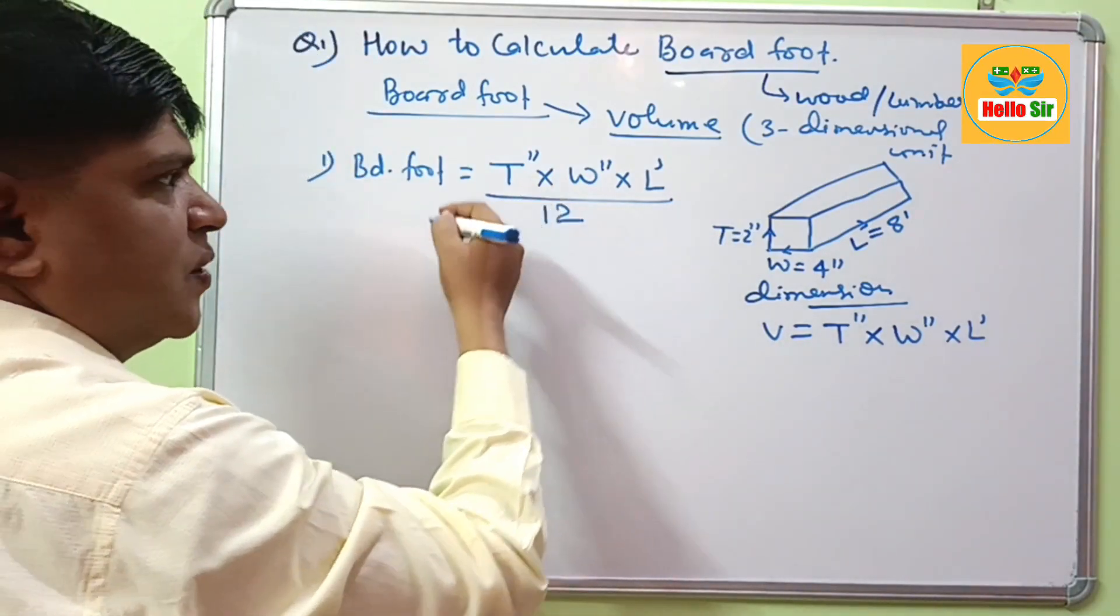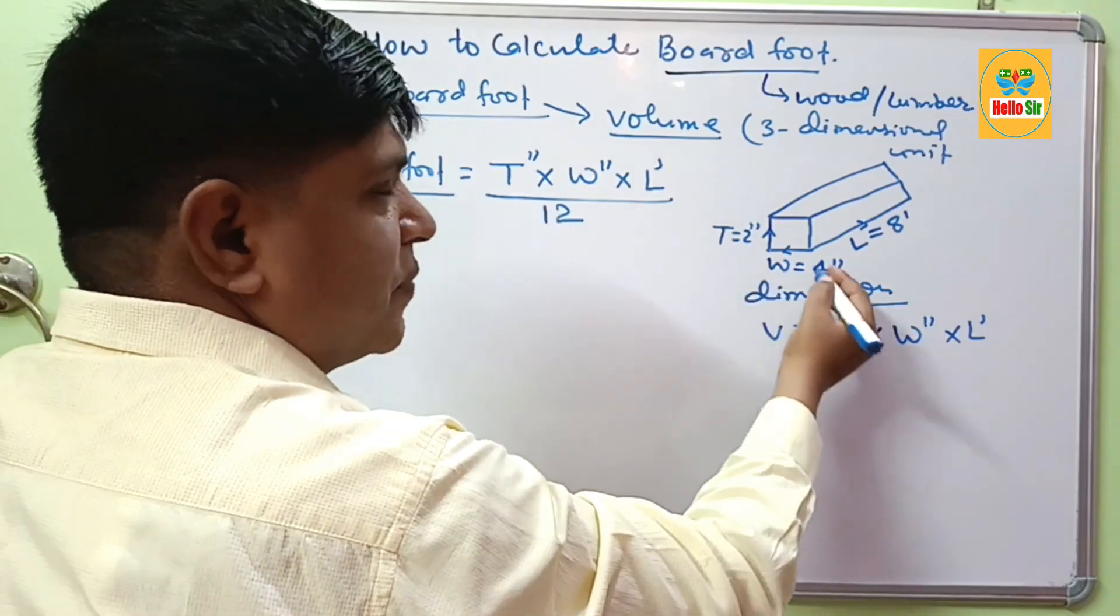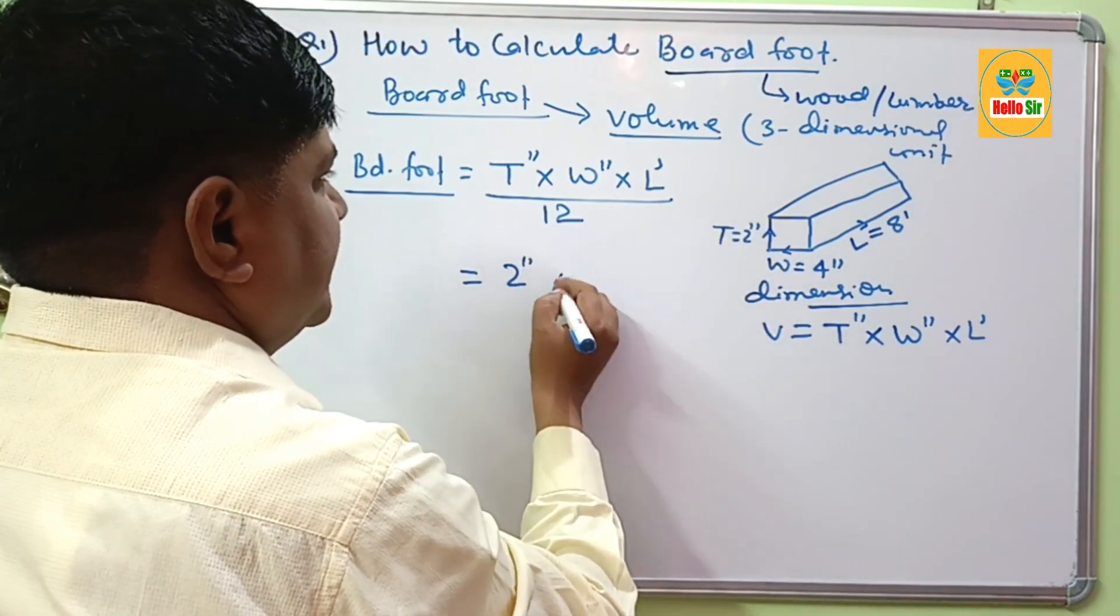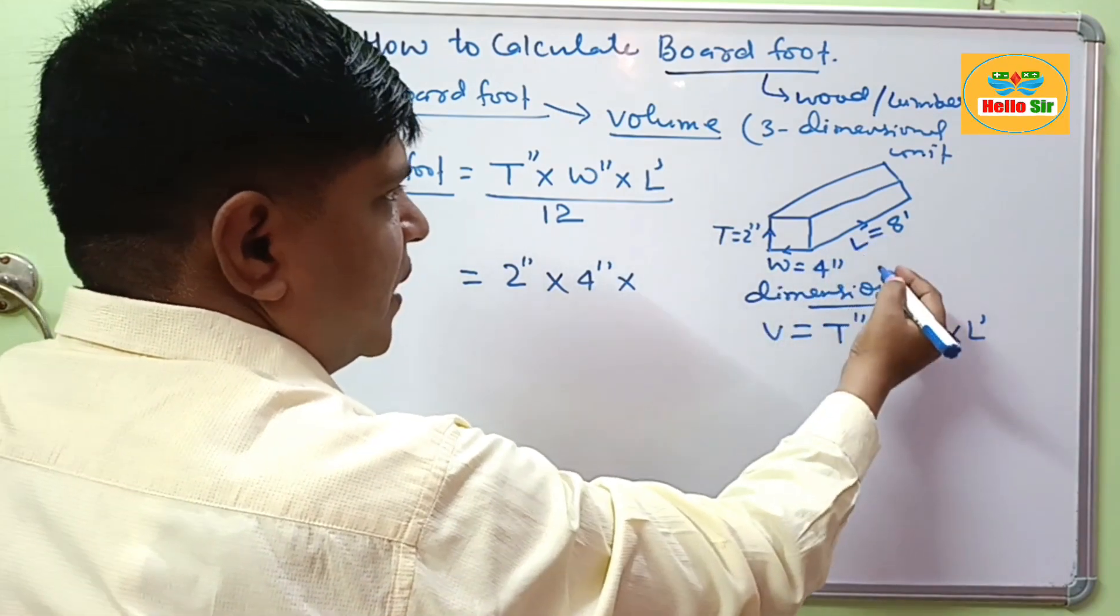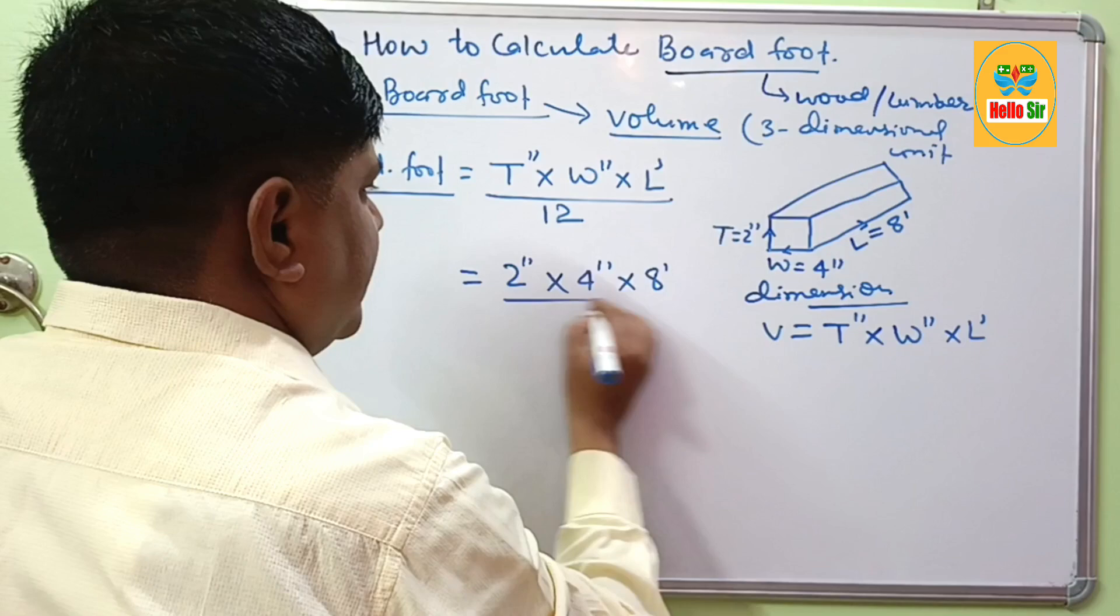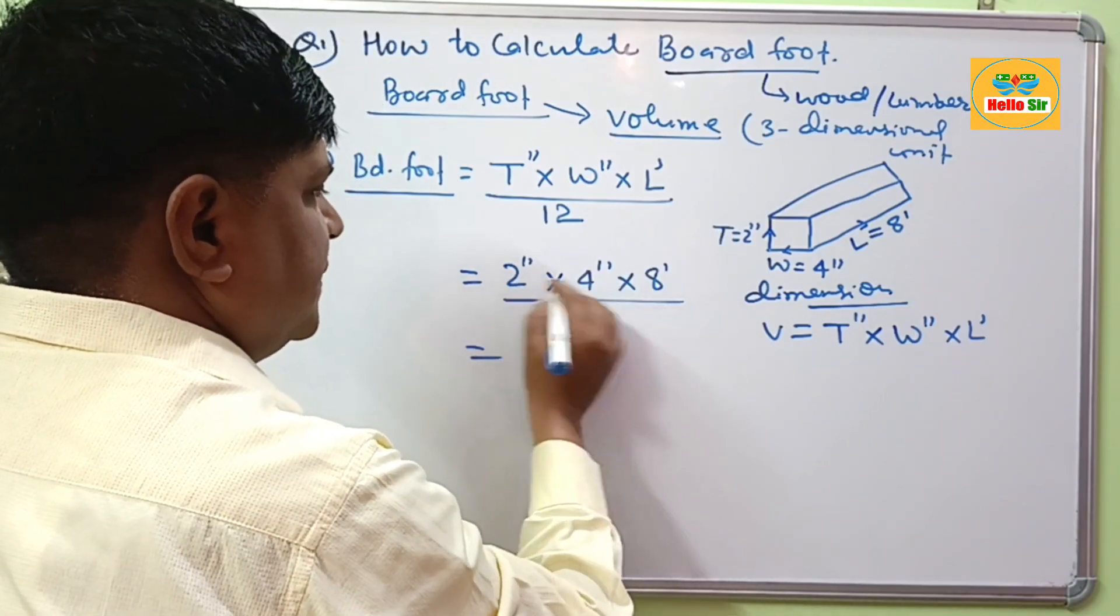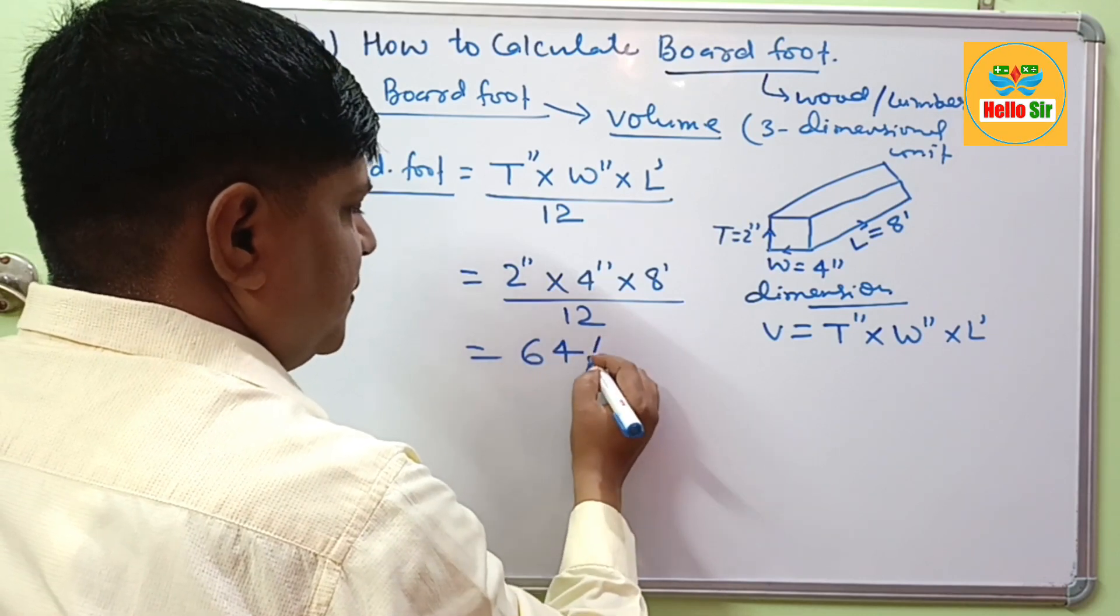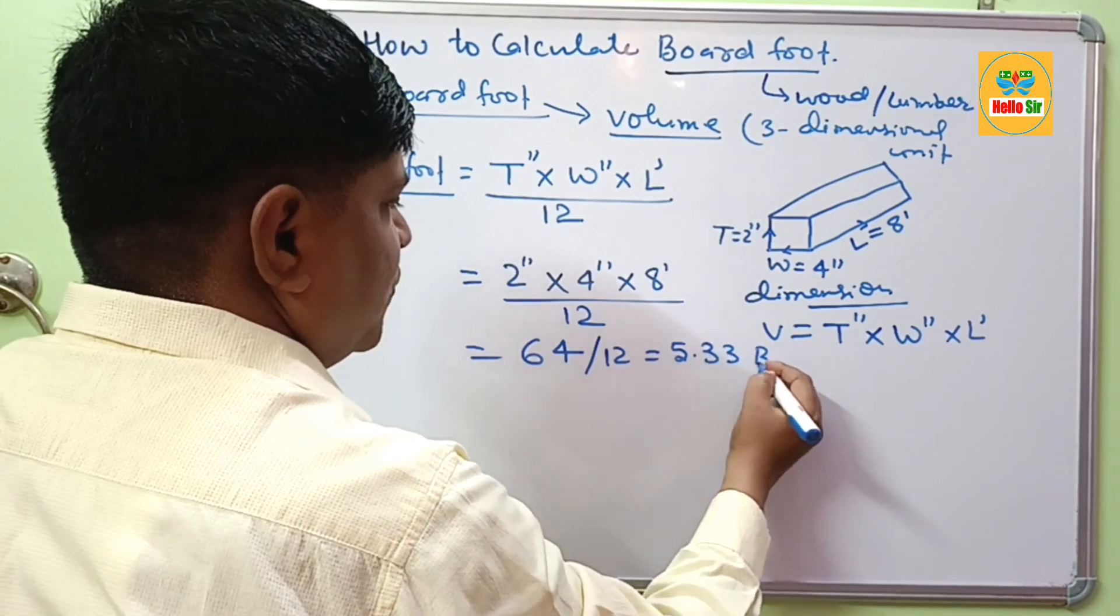Here you have given the thickness is 2 inches, width is 4 inches and length of lumber is 8 foot. Divide by 12. Multiply all these, this will come to 64. And if you divide this one, this will come to 5.33 board feet.